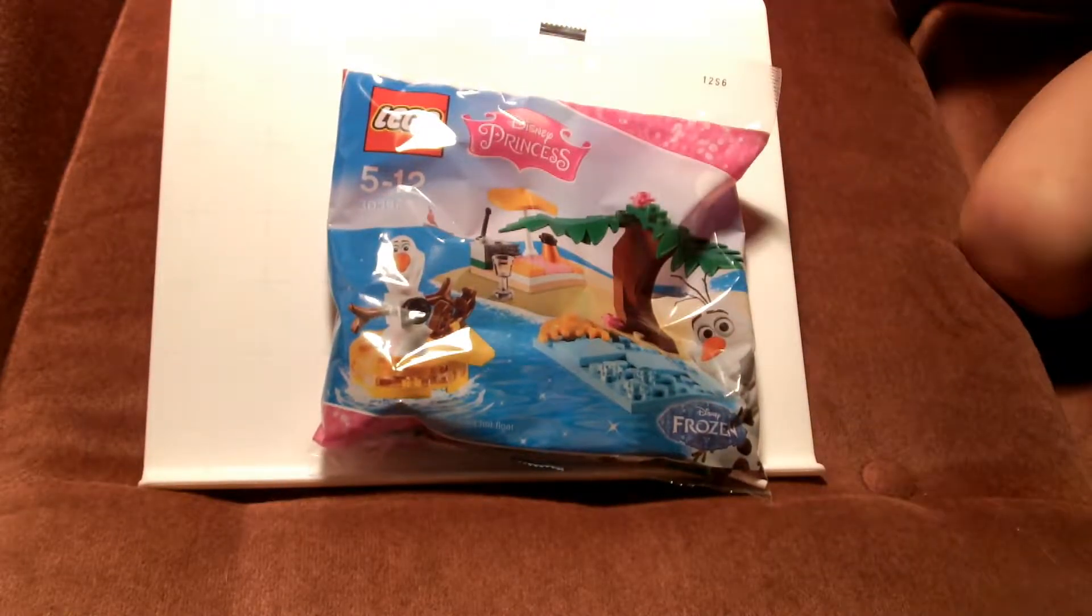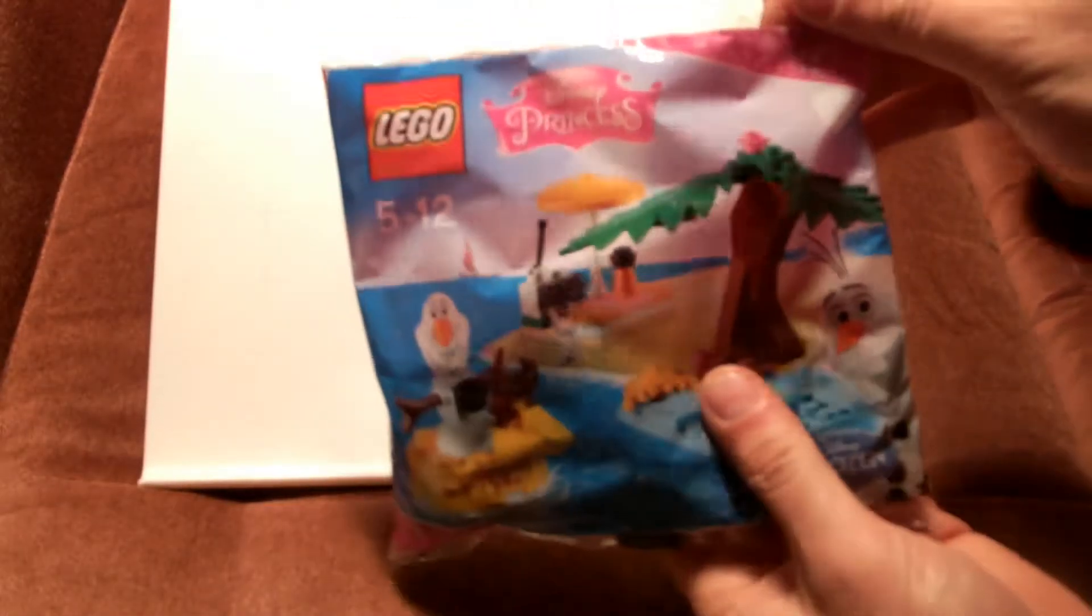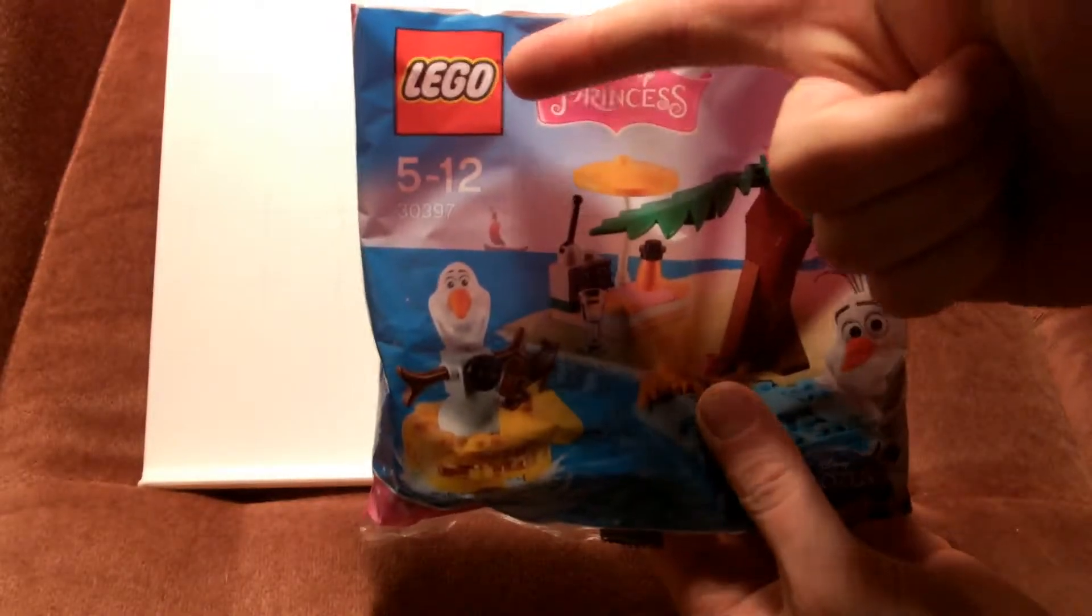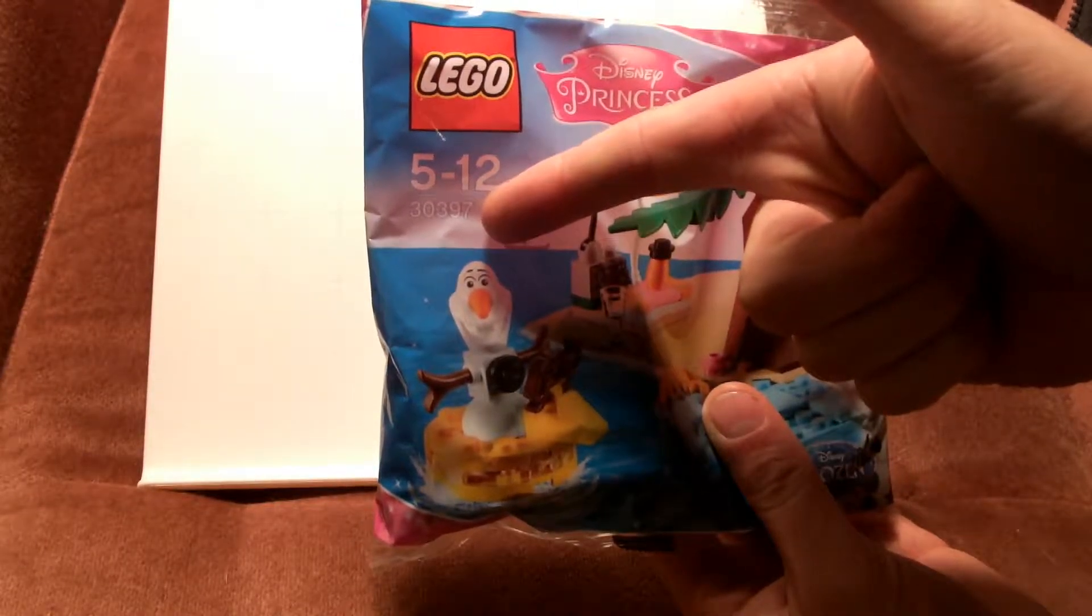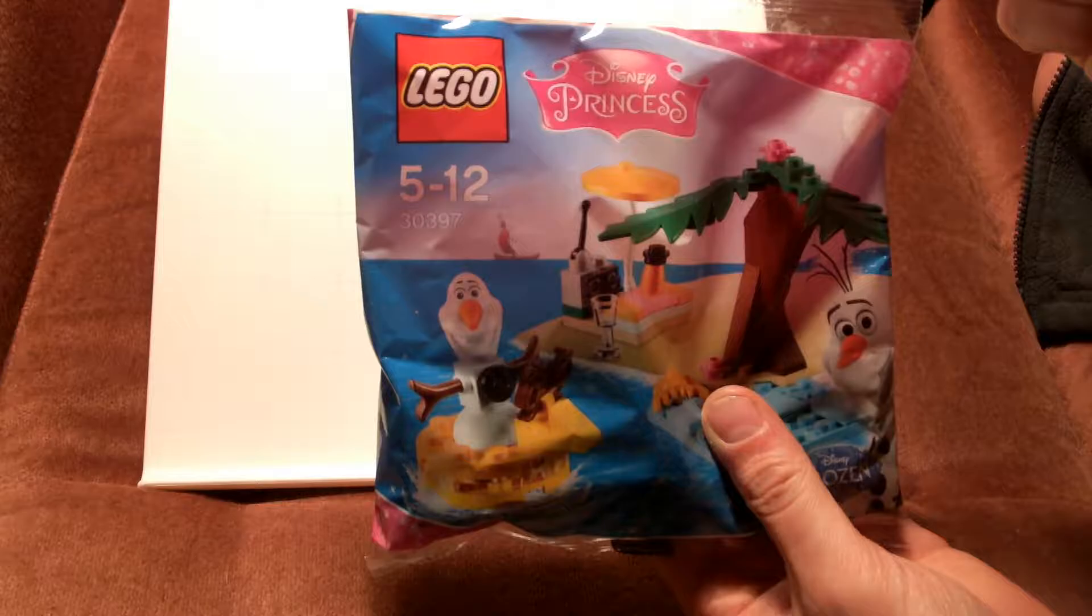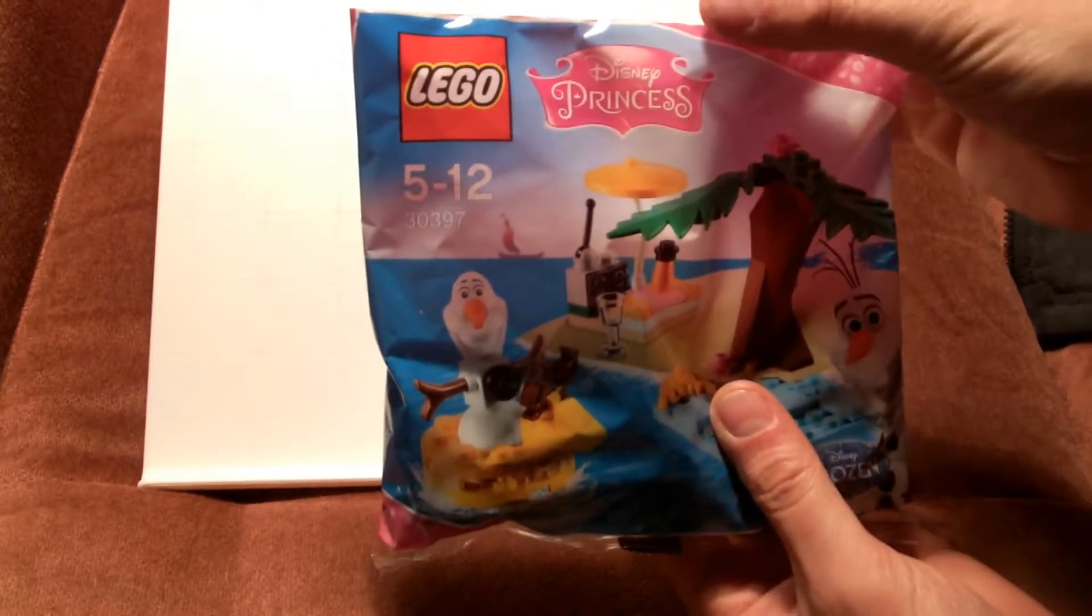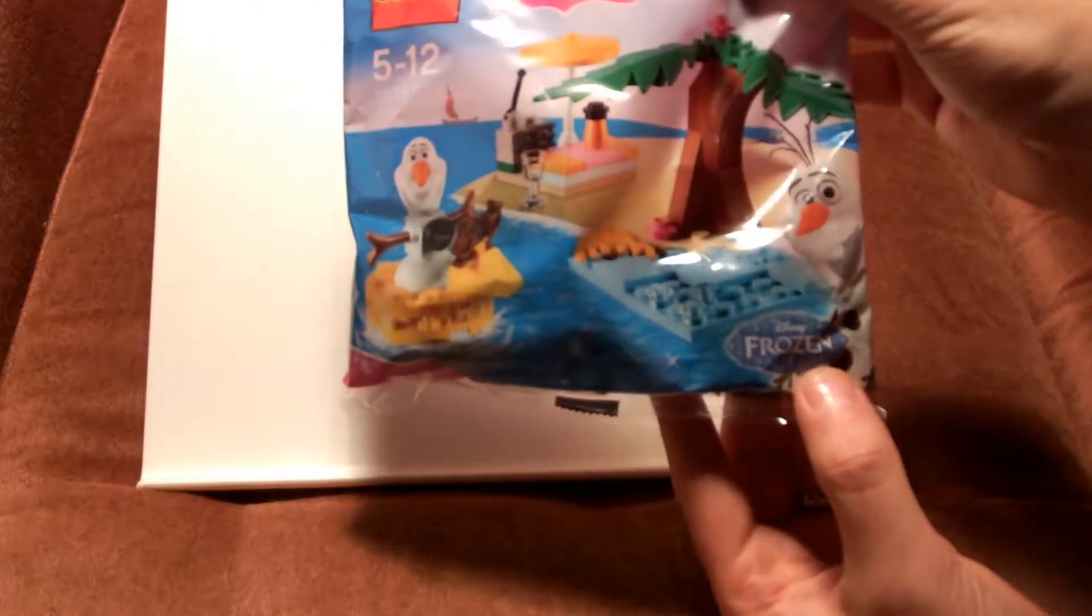There's a little tree right there. The camera has batteries. So this is Lego 30397. Olaf is made of snow. And it's not even melting in the sun. This is Disney Princess, Disney Frozen.